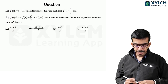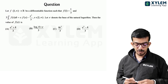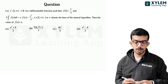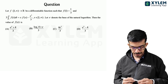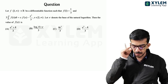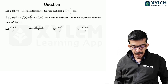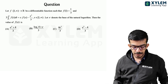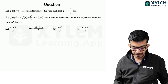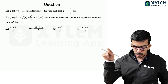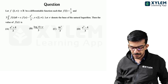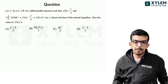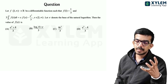Let f be defined from the closed interval [1, ∞) to the set of all real numbers, a differentiable function such that f(1) = 1/3, and 3 times the integral from 1 to x of f(t) dt equals x·f(x) minus x³/3, for x in the closed interval [1, ∞). Let e denote the base of the natural logarithm. Find the value of f(e).